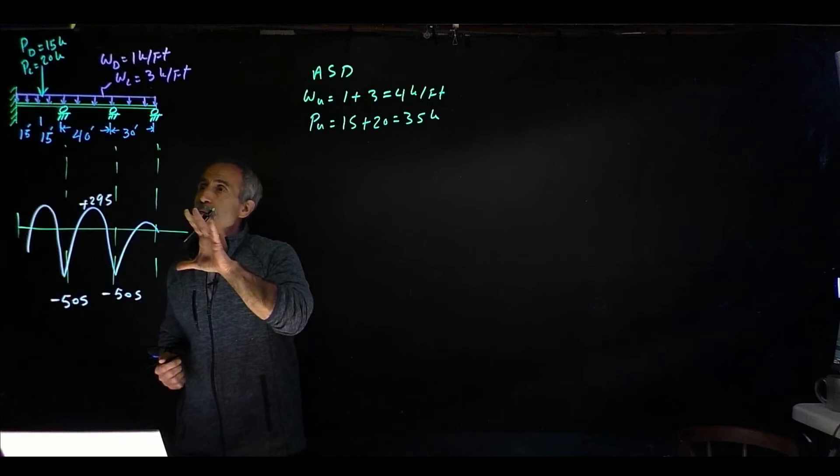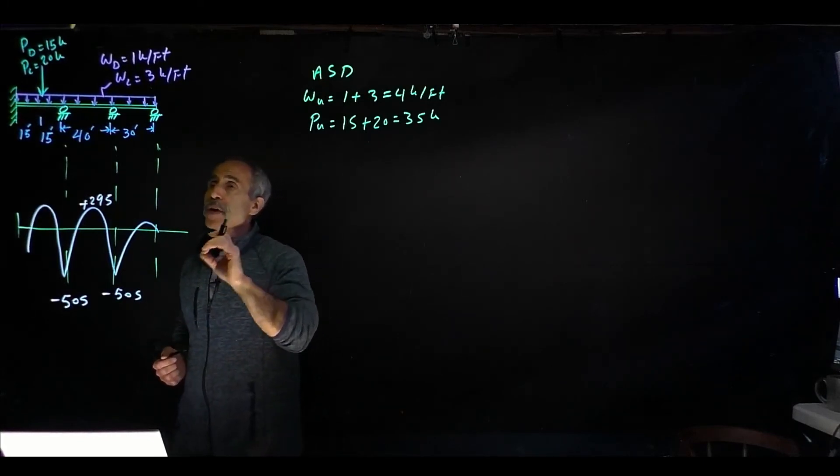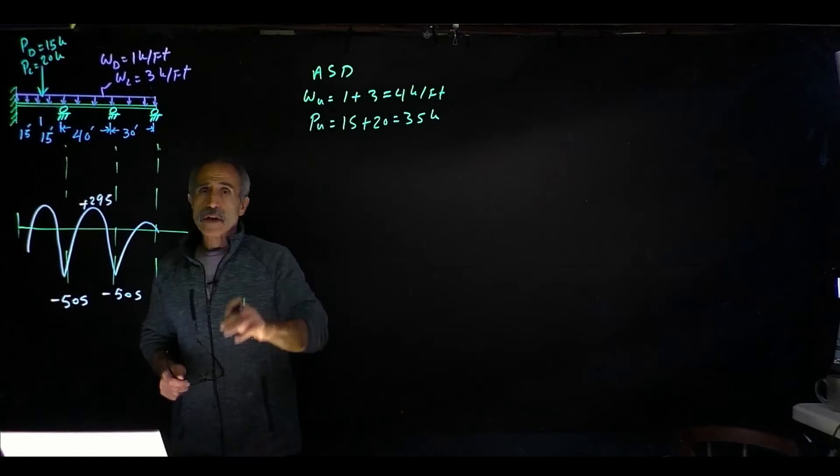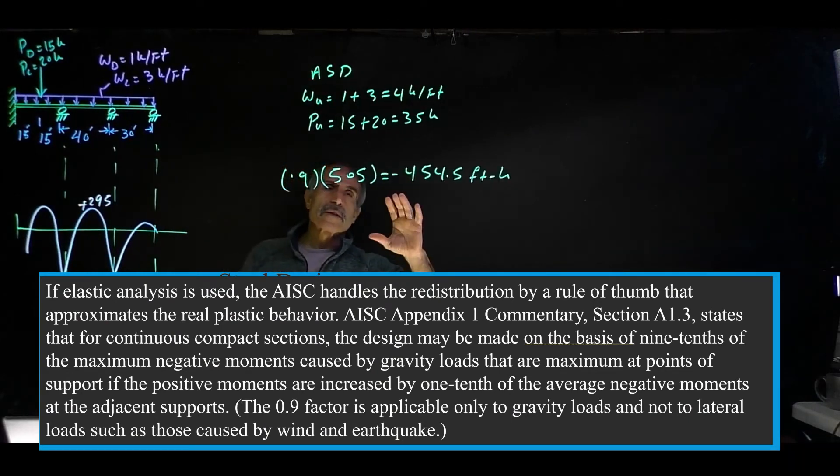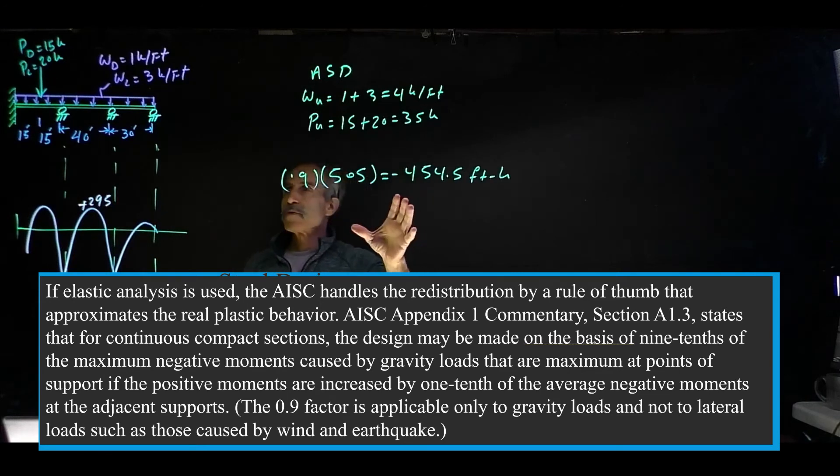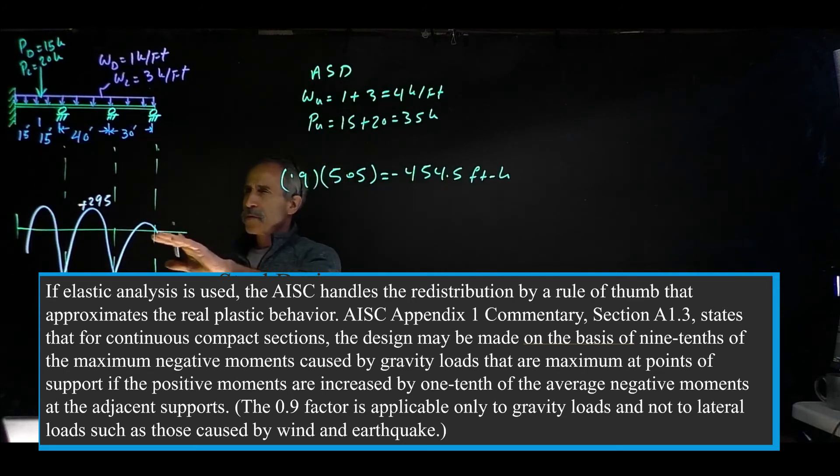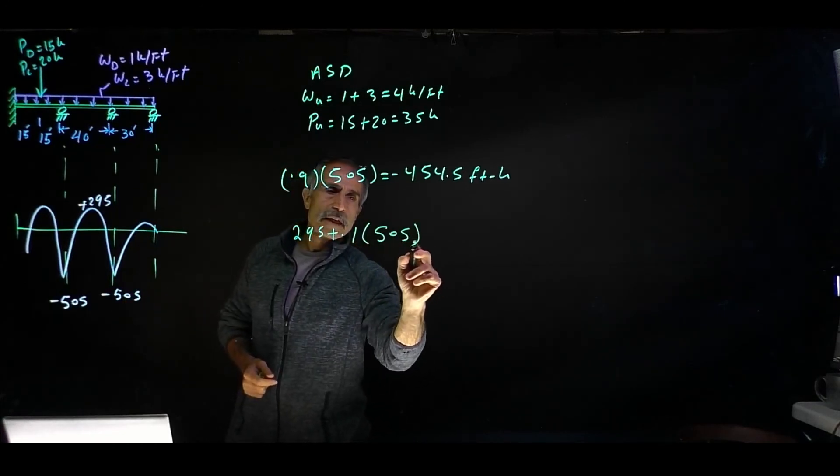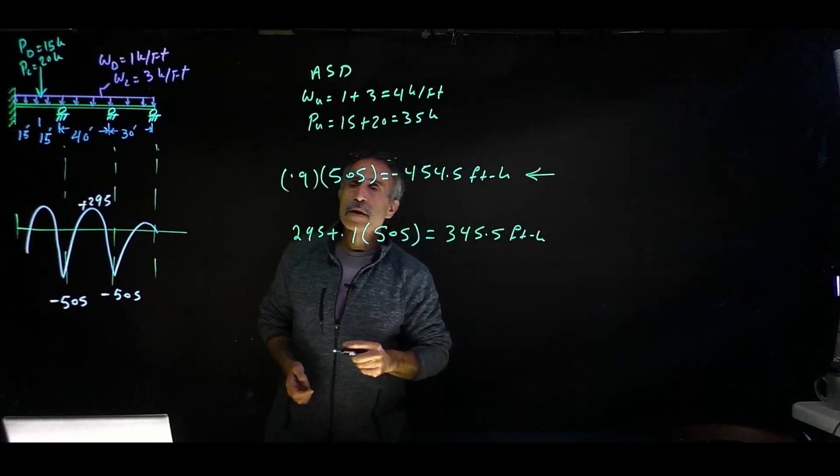And there's something the code allows. It says you can use 0.9 rule, that means you multiply the negative moment by 0.9, the maximum negative moment by 0.9 and use that for your whatever controls between negative and positive. So 0.9 multiplied by 505, this same section says your maximum moment is going to be either 90% of your maximum negative moment or your positive moment plus 10% of your negative moment. So it's going to be 295 plus 10% of 545 and that is equal 345.5 foot kip. Of course, this one controls. Now this one controls.